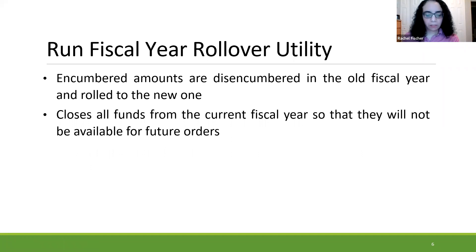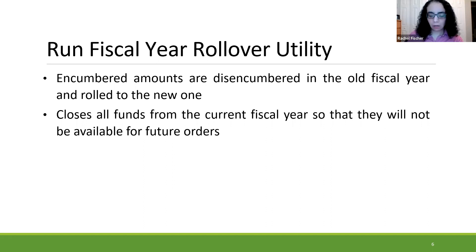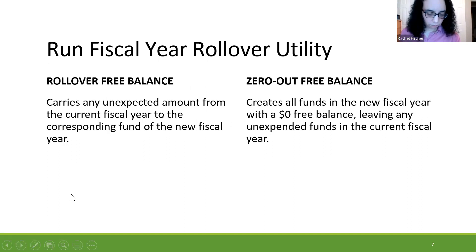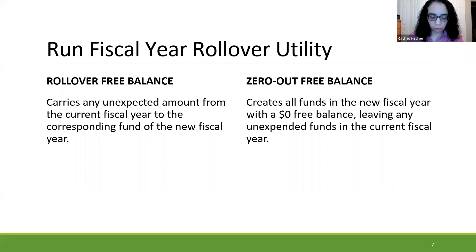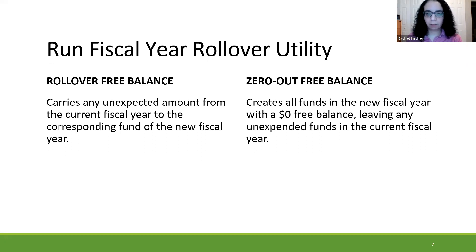When you choose to roll over the encumbrances, the encumbered amounts are disencumbered in the old fiscal year and rolled over to the new one. This is recorded in the fund history of the fund records. The utility closes all funds from the previous fiscal year so they will not be available for future orders. The free balance can either be rolled over with the encumbrances or zeroed out, leaving any unexpended funds in the current fiscal year — which would require library staff to manually allocate money to each fund.